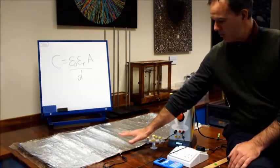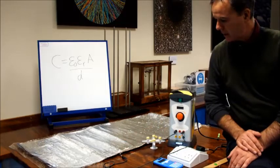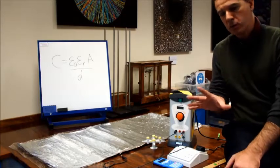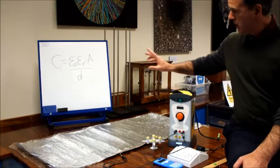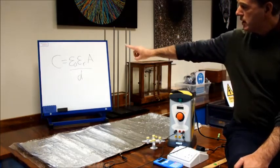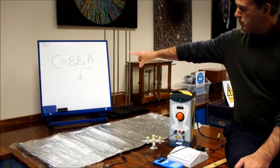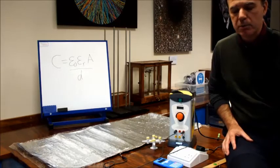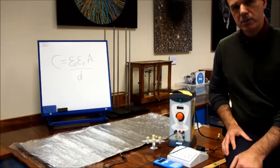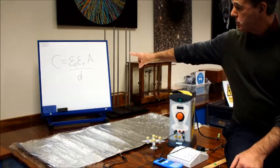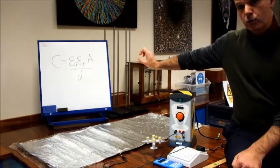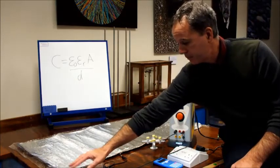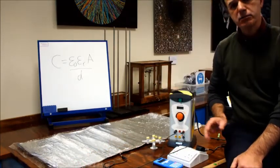By the way, the capacitance of this particular capacitor we could work out using the equation which is on the board here. It's not in the syllabus, by the way, this equation for you guys, but it's quite interesting to see it anyway. C is the capacitance of the capacitor, epsilon naught is something called the permittivity of free space, which is about 8.8 times 10 to the minus 12—quite a small number. Epsilon r is the relative permittivity of the dielectric, which in this case is the cling film, and that has a value of about 2.25.